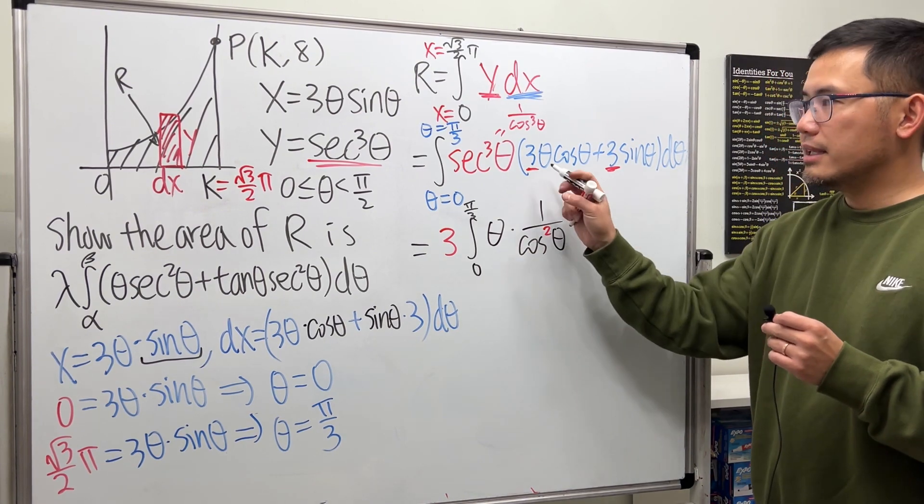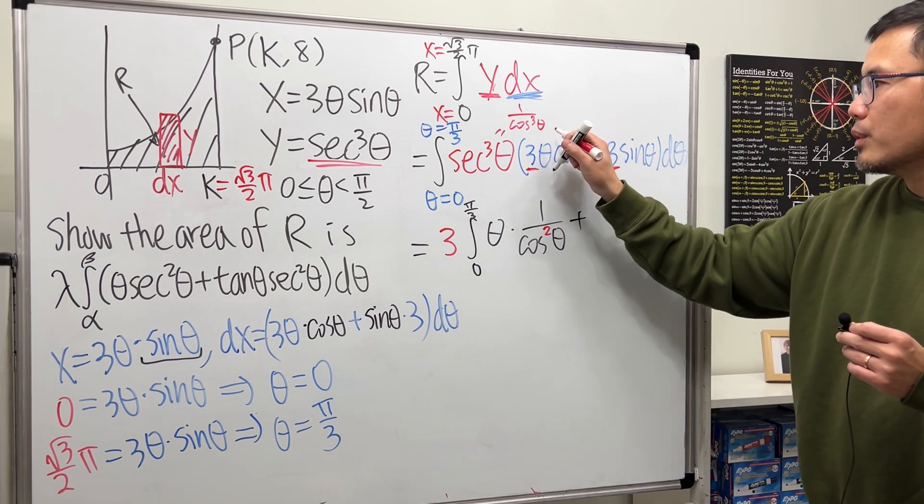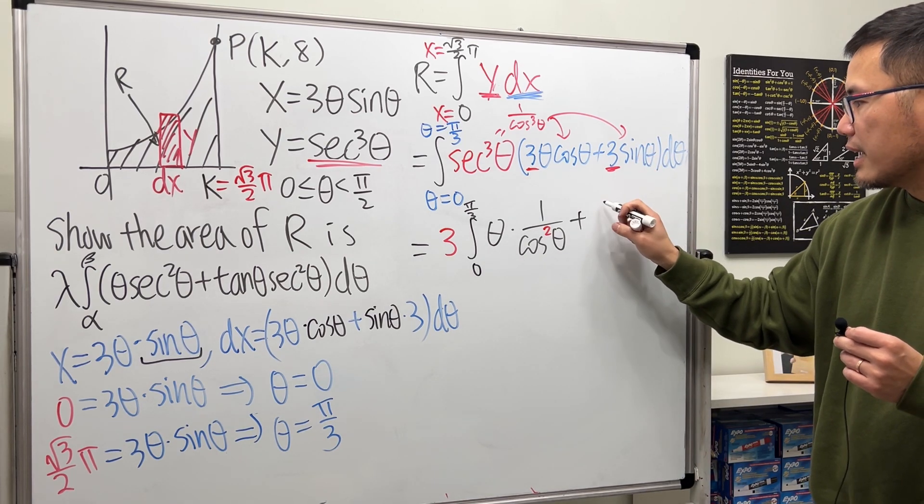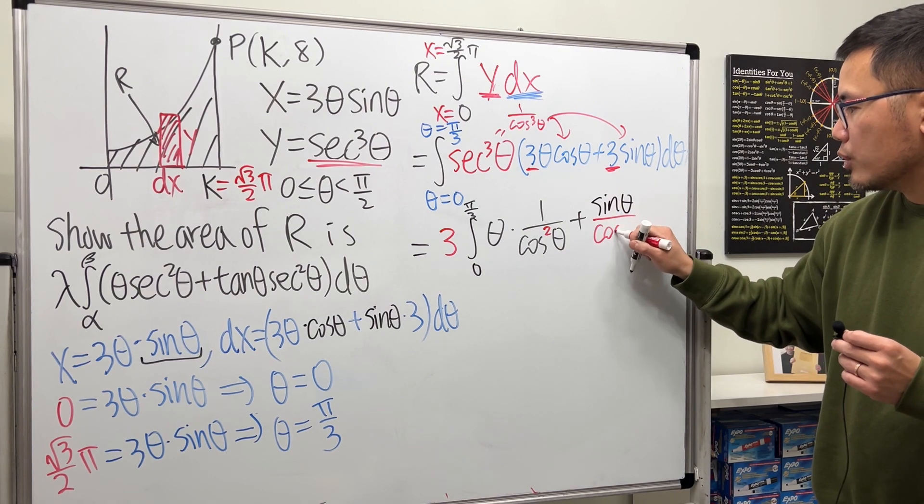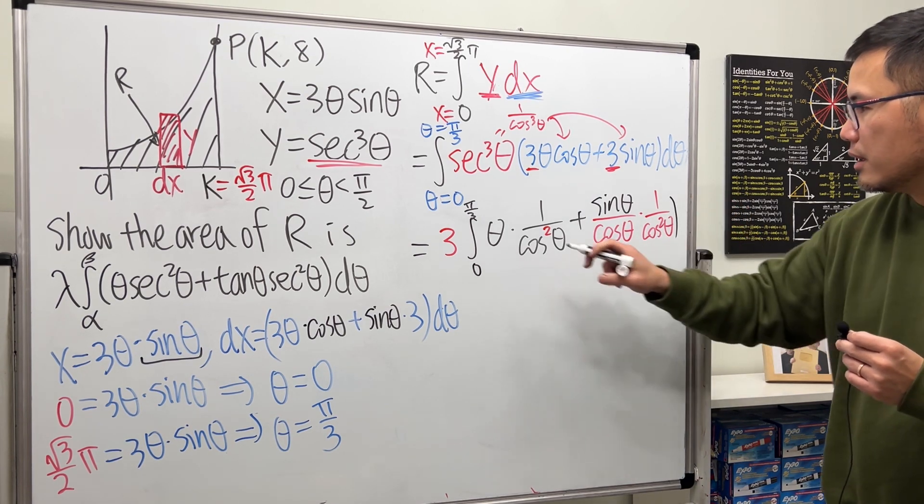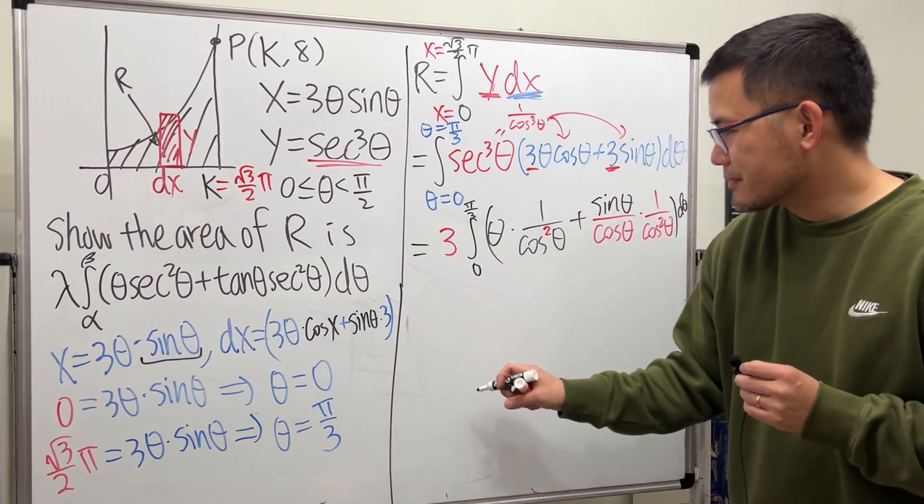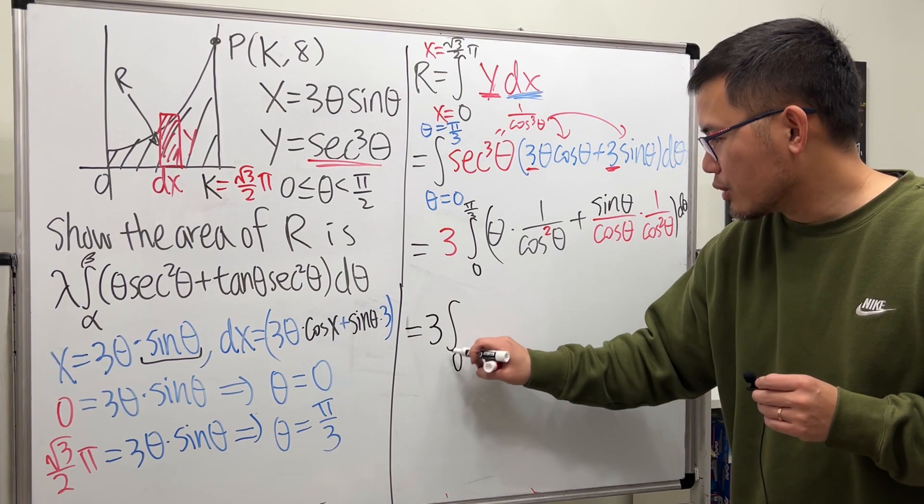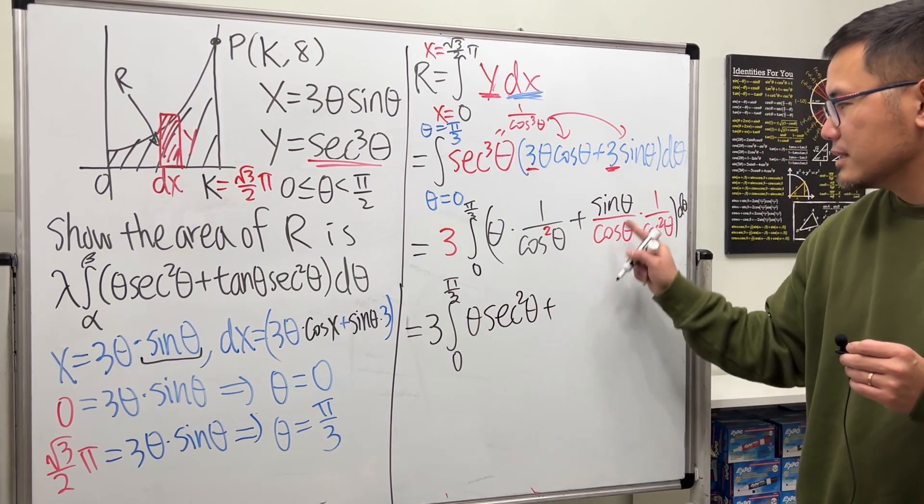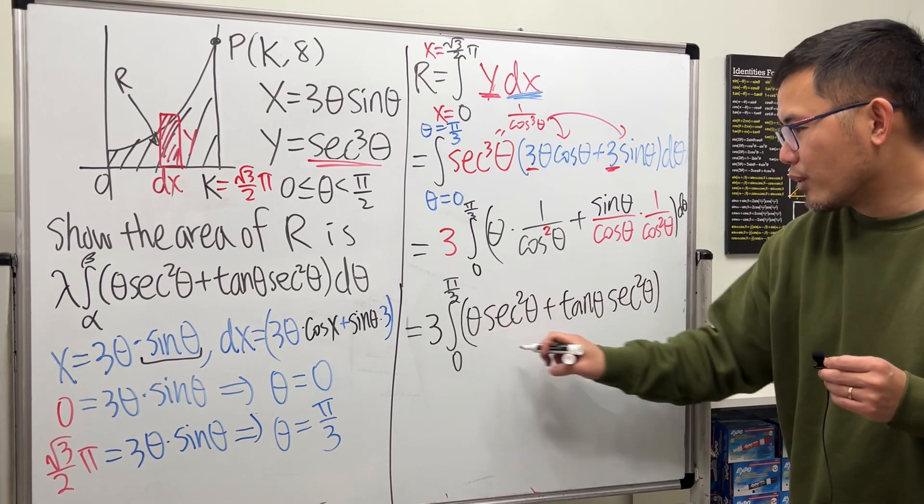This times this - one of the cosines cancel, so we have θ times 1/cos²θ. Continue - plus 3 is out already. For this times that, I'm distributing it. I will break this apart: put down sinθ over cosθ, but we have two more powers on the bottom, so that will be 1/cos²θ, all this with dθ. This equals 3 times the integral from 0 to π/3, and we have θ sec²θ plus tanθ sec²θ, and then of course we have dθ.